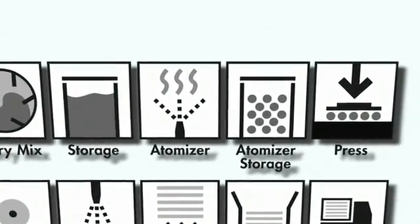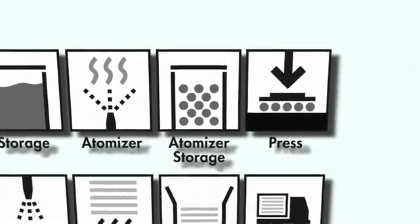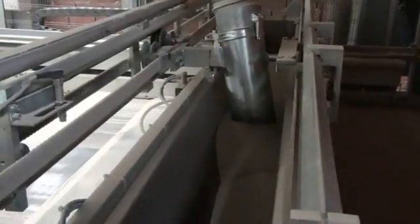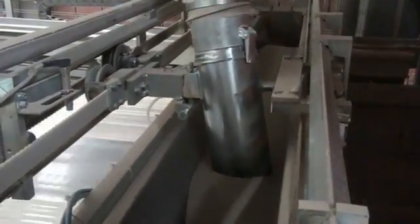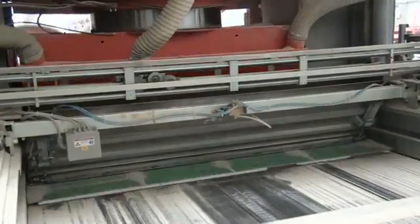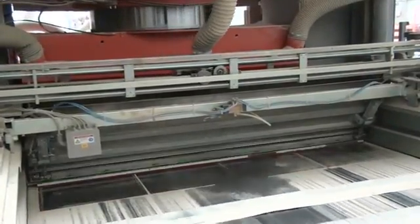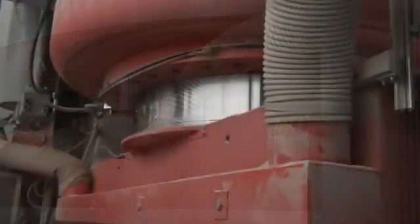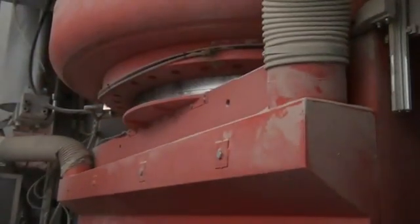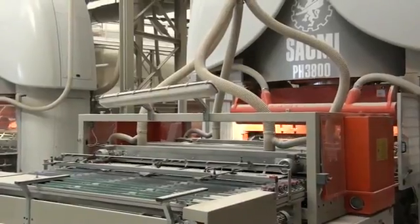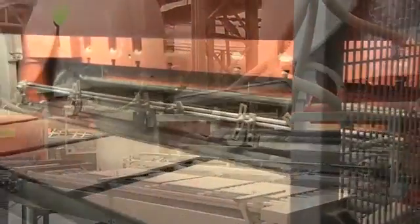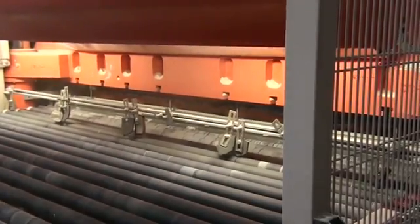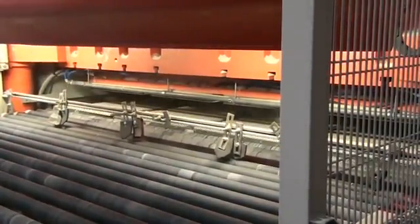The atomized powder is fed into a holding vat just behind the press. The vat releases measured quantities of atomized powder into a tray, which distributes the powder evenly into the mold. A force of 340 to 400 kilograms per square centimeter is applied using a large hydraulic press. The combination of high pressure and residual moisture turns the powder into a solid mass.